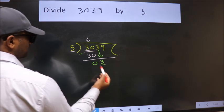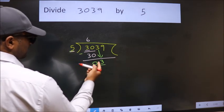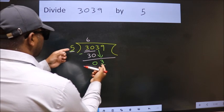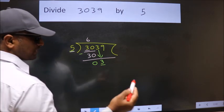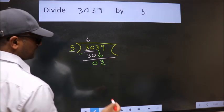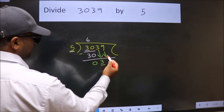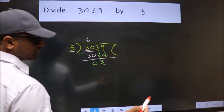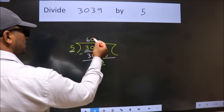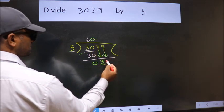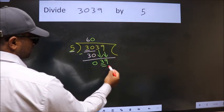Now, here we have 3, here 5. 3 is smaller than 5, so we should bring down the second number. And the rule to bring down the second number is: put 0 here. Then only we can bring this number down.